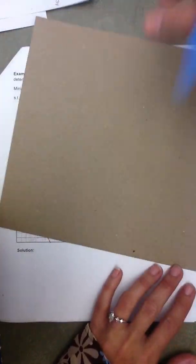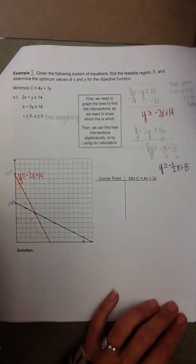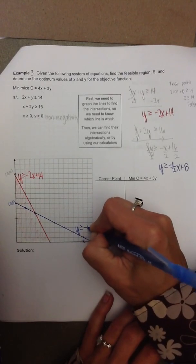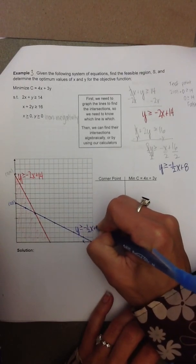And this line here represents the inequality y is greater than or equal to negative 1 half x plus 8.